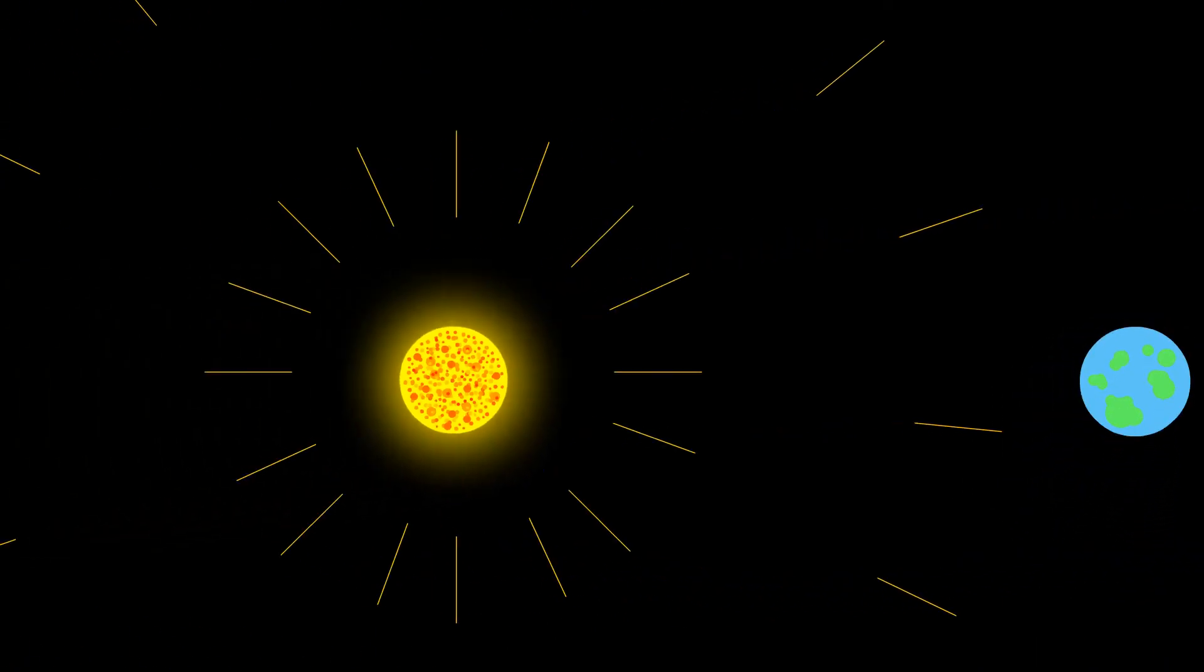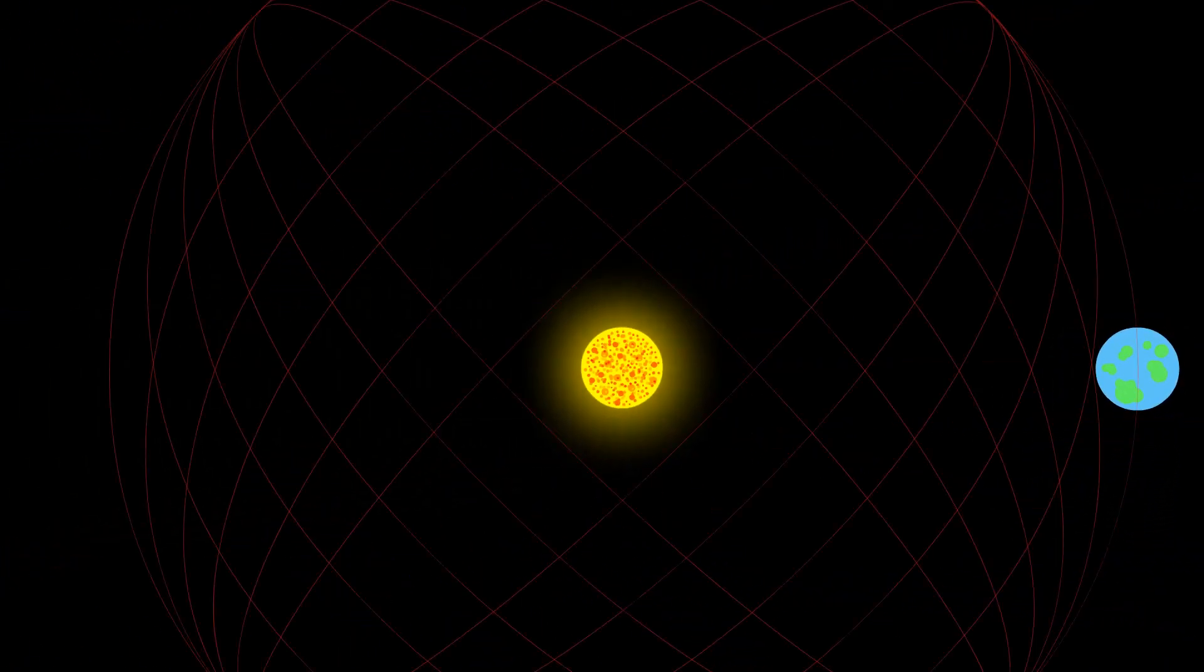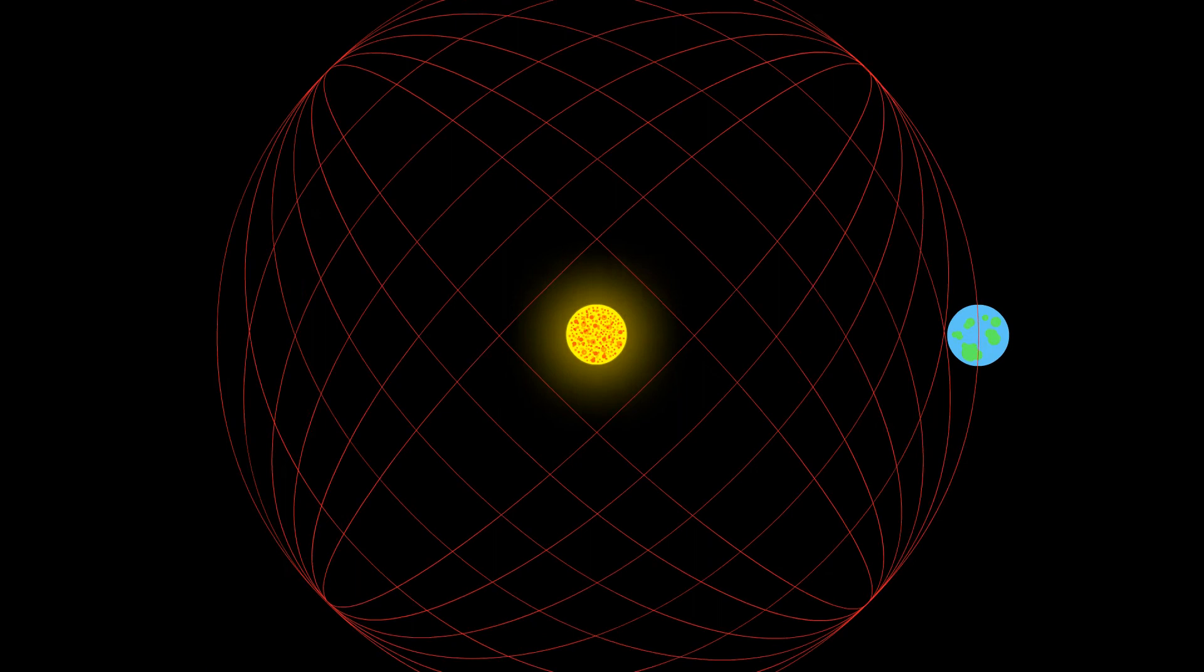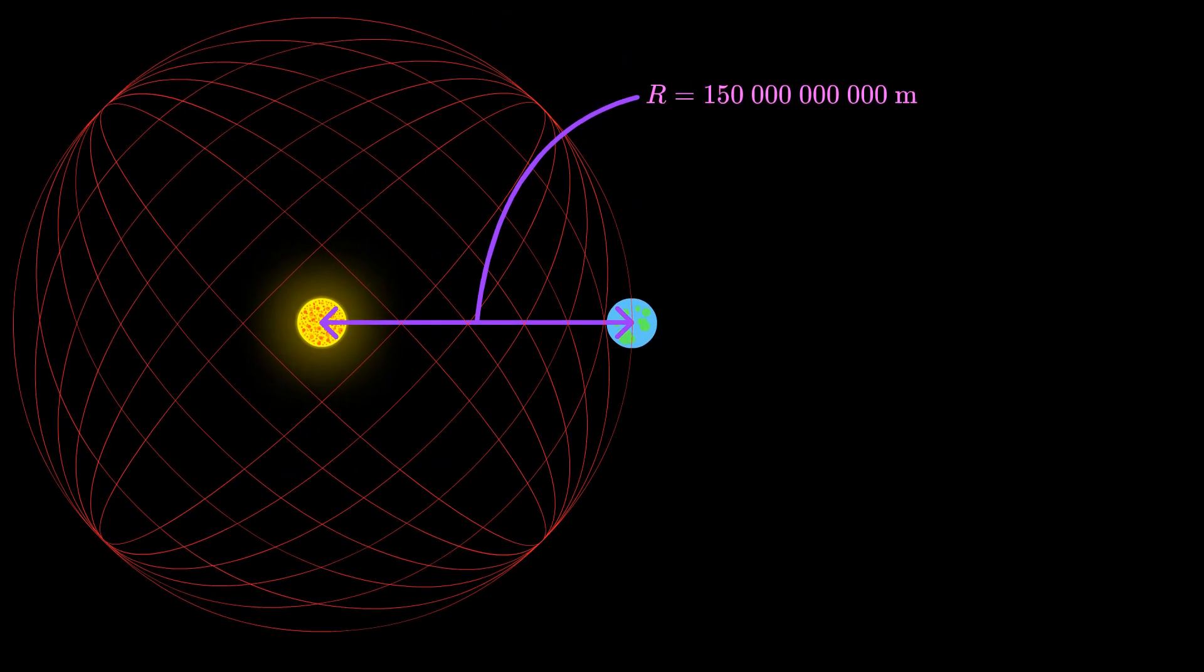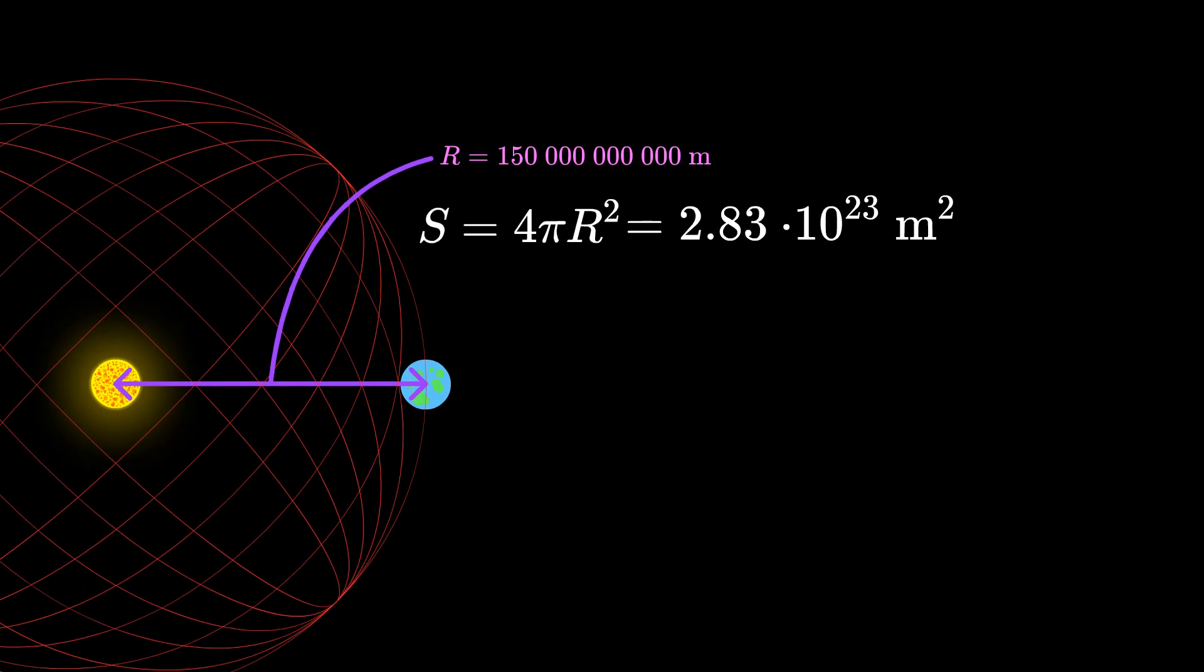Now, since we know the Sun's power per 1 meter squared, we can multiply this by the total area of a sphere around the Sun with a radius of 150 billion meters, which is the distance between the Earth and the Sun. So the equation for area of a sphere is 4 pi times r squared, which gives us roughly 2.83 times 10 to the 23 meters squared.